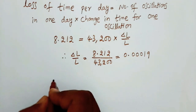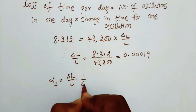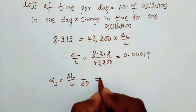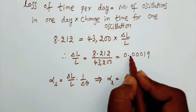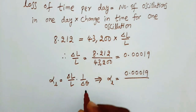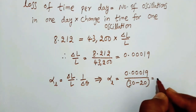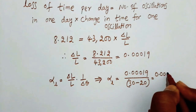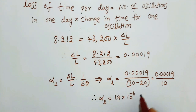We know the coefficient of linear expansion alpha L is equal to (delta L over L) times (1 over delta theta). So alpha L equals 0.00019 divided by delta theta, where delta theta is theta 2 minus theta 1, which is 30 minus 20 equals 10 degree Celsius. From this we can get alpha L is equal to 0.00019 divided by 10, therefore alpha L equals 19 times 10 to the power minus 6 per degree Celsius.